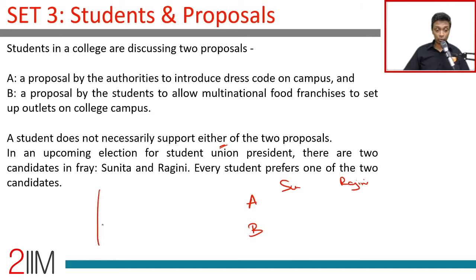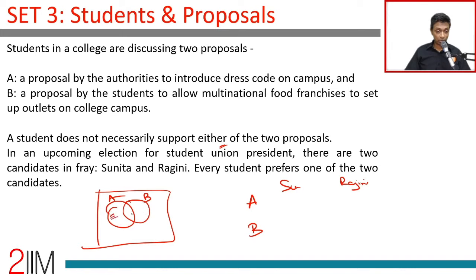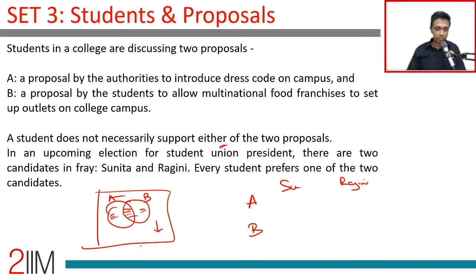A and B — you've got to imagine them in a set theory framework. People liking A, people liking B — that is A only, B only, both A and B, or neither A nor B. Whereas Sunita and Ragini are two people contesting elections, so you vote for one or the other. The sum total of Sunita and Ragini should equal the total number of people. You don't have the luxury of saying you'll vote for Sunita and Ragini, and there's no 'none of the above' option.